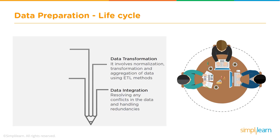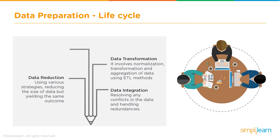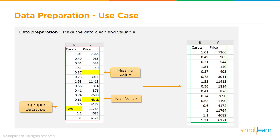Data transformation: there will be situations where data is coming from multiple sources and when we merge them together, they may not be matching, so we need to do transformations to make everything consistent. We may also have to do data reduction — if the data size is too big, you may have to reduce it meaningfully without losing information. Then there is data cleaning: there will be either wrong values, null values, or missing values, and we need to handle all of that.